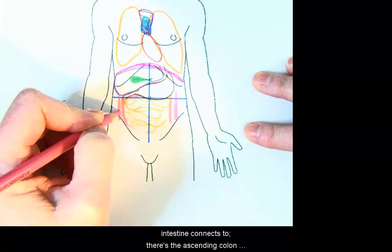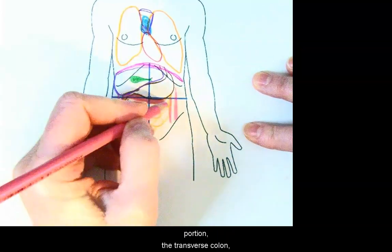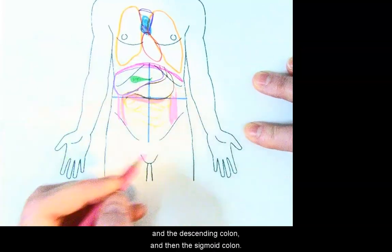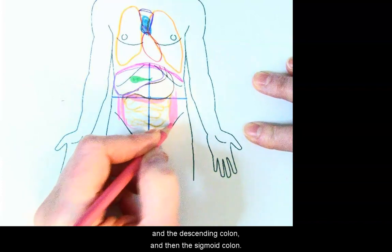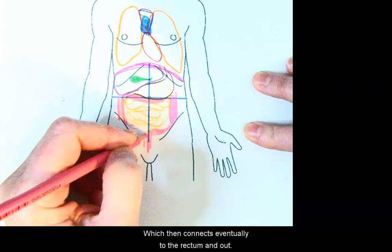There's the ascending colon portion, the transverse colon, and the descending colon, and then the sigmoid colon, which then connects eventually to the rectum and out.